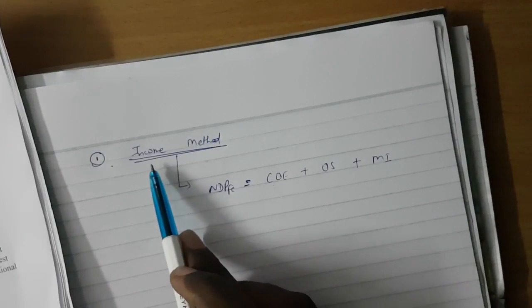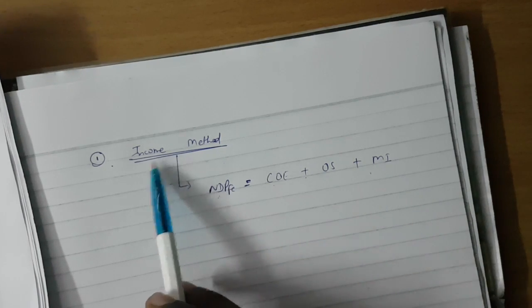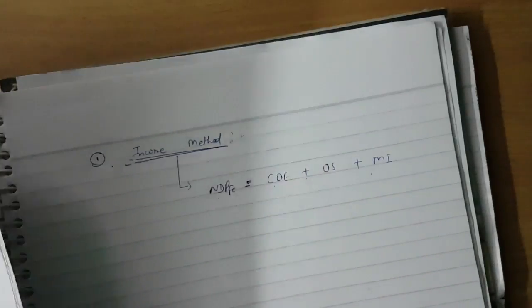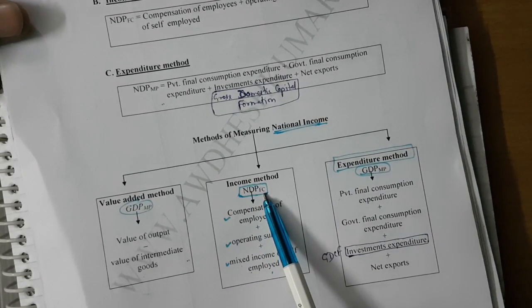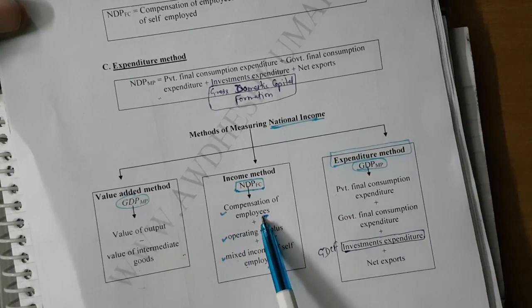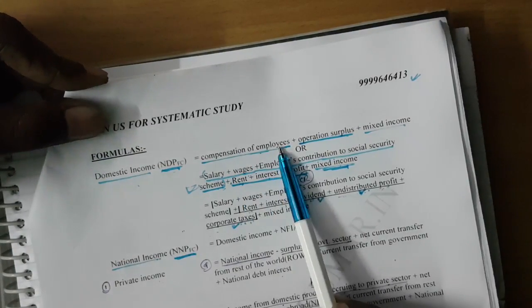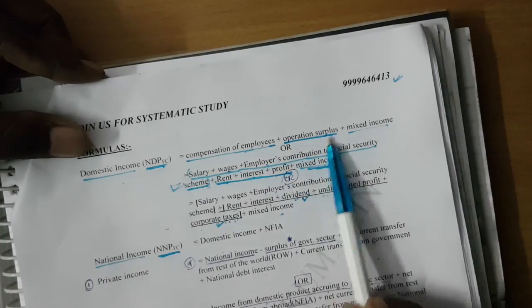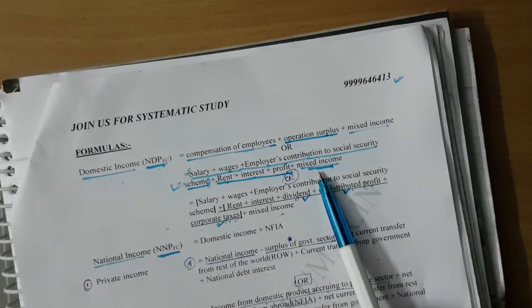Income method is explained in lecture number two on our YouTube channel. Compensation of employees includes wages, salary, and employer's contribution to social security schemes. Operating surplus includes rent, interest, and profit. Mixed income of the self-employed is taken as zero if not given in the question.